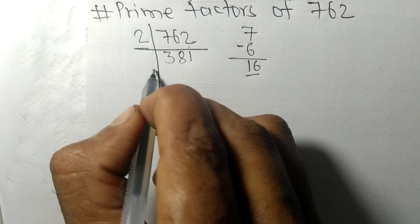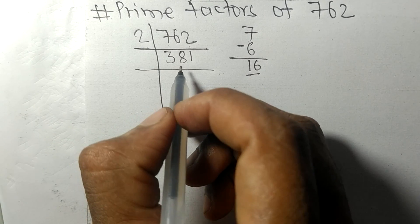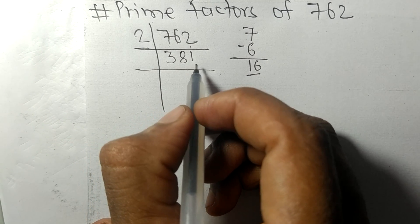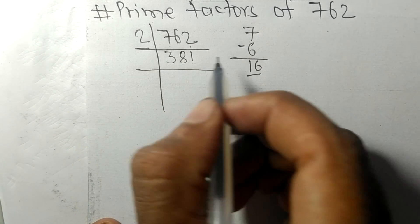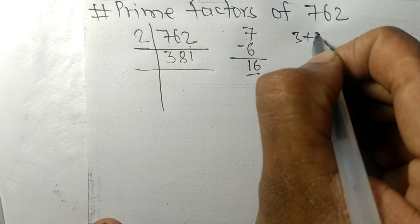So now we got 381, and when we add all these numbers, that is 3 plus 8 plus 1, then we get 12.